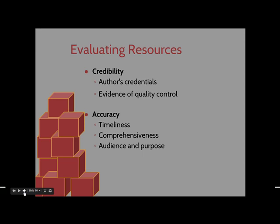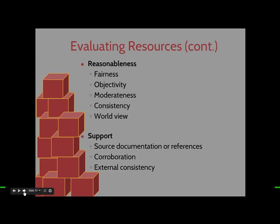The next thing is accuracy — look at timeliness, comprehensiveness, and the audience and purpose: who is it written for and why? Next, look at reasonableness: pay attention to the fairness, objectivity, how moderate it is, its consistency and world view. Is it very opinionated or is it just presenting facts and data? With scholarly articles, they're typically just presenting facts, not giving opinions like editorial pieces in a magazine would. Lastly, look at support — sources of documentation or references, usually at the end of an article. Does it have an extensive bibliography, and are those sources themselves credible, accurate, and reasonable? Also look at corroboration and external consistency: is the same information represented in other articles on the same topic, and are other researchers getting the same conclusion?